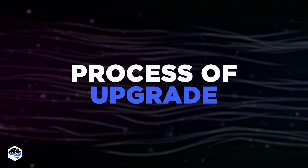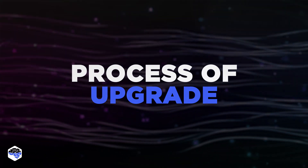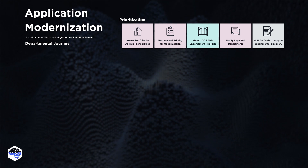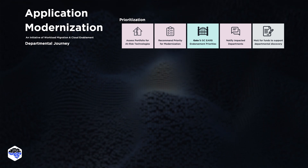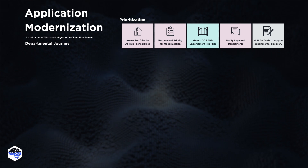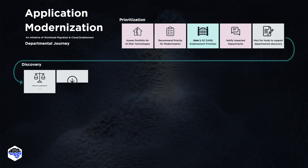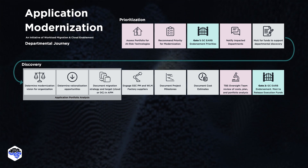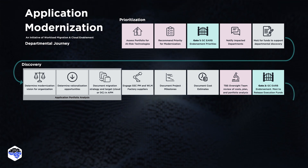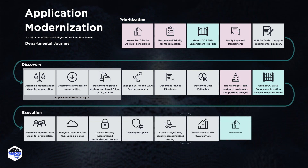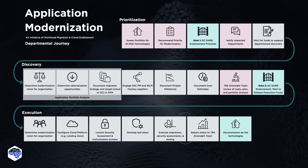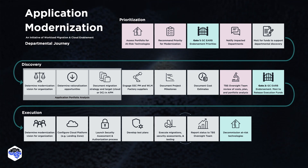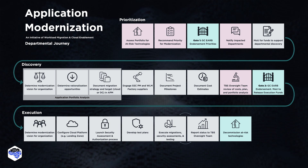How to prepare for upgrading legacy systems: The first step is prioritization. You need to assess the portfolio for at-risk technologies, set your priorities, notify departments, and move on to discovery. At this step, you determine the modernization vision and opportunities, document your strategy, and plan the next steps. Finally, we come to the execution, where you configure the cloud platform, launch security assessment, develop test plans, execute migration, and report its status.